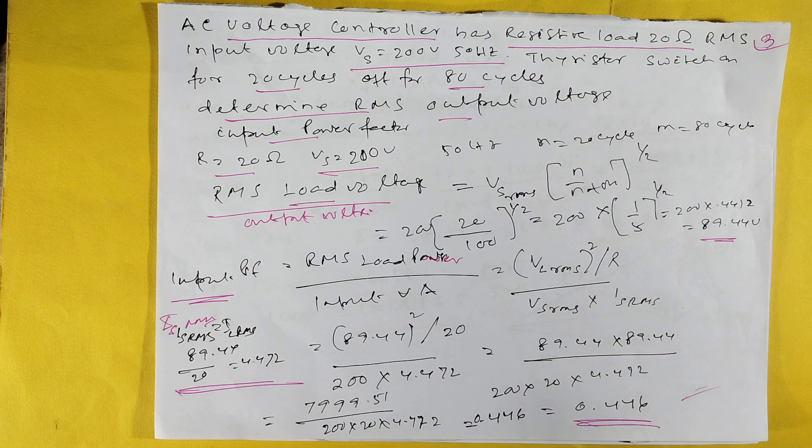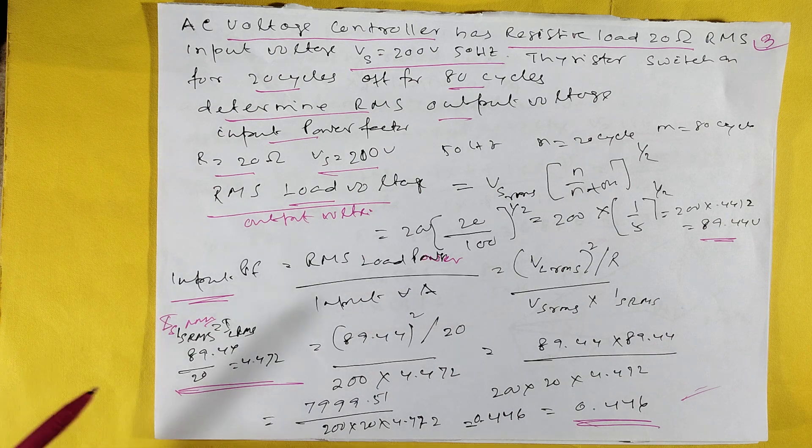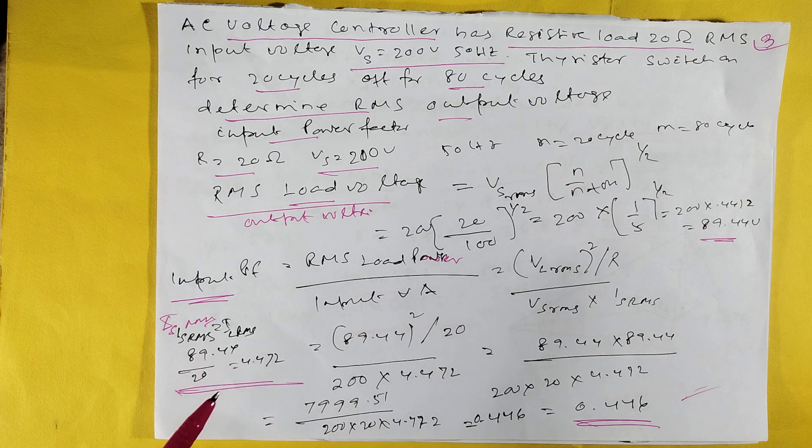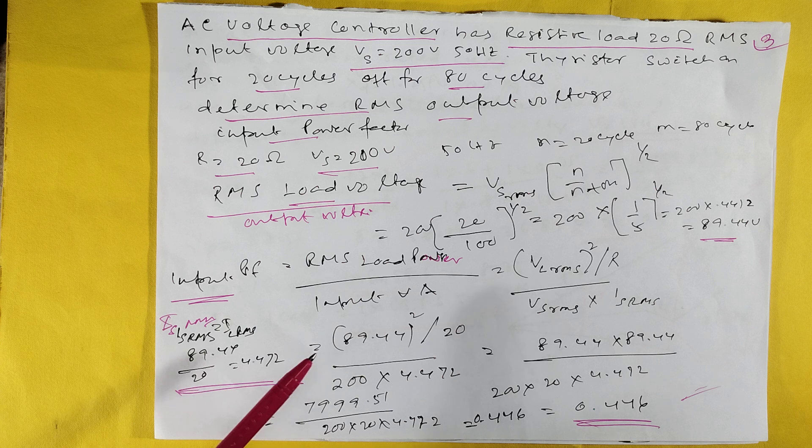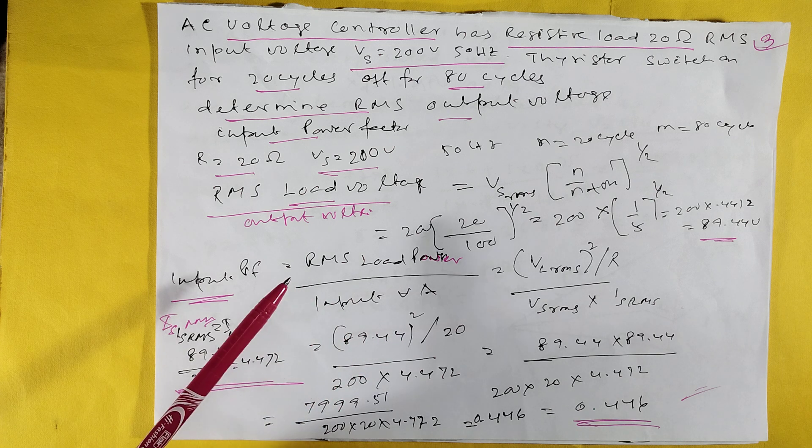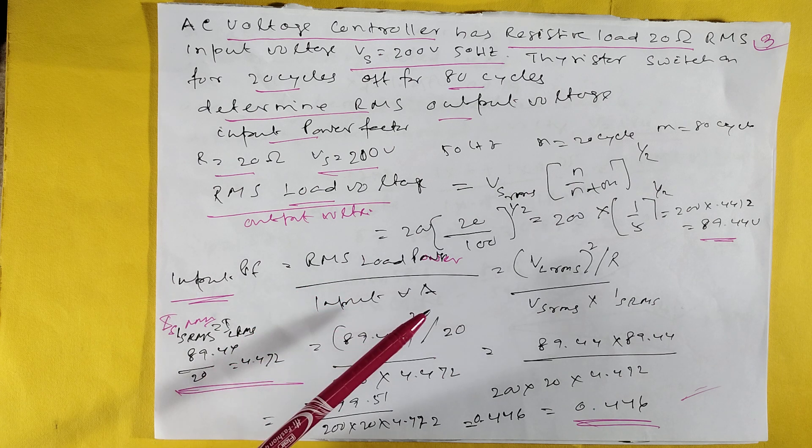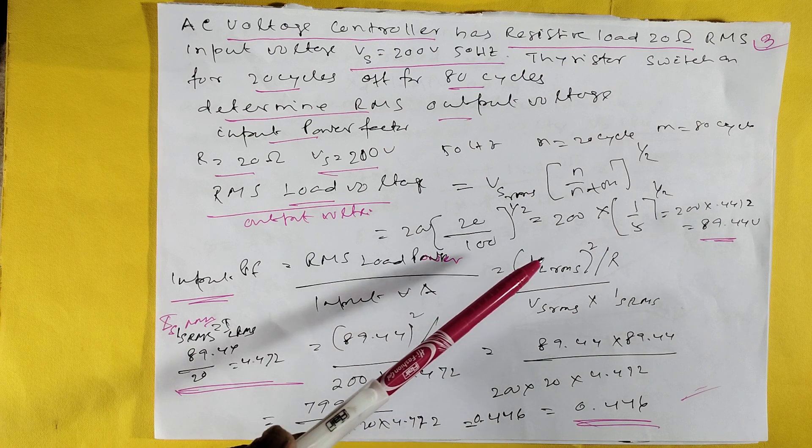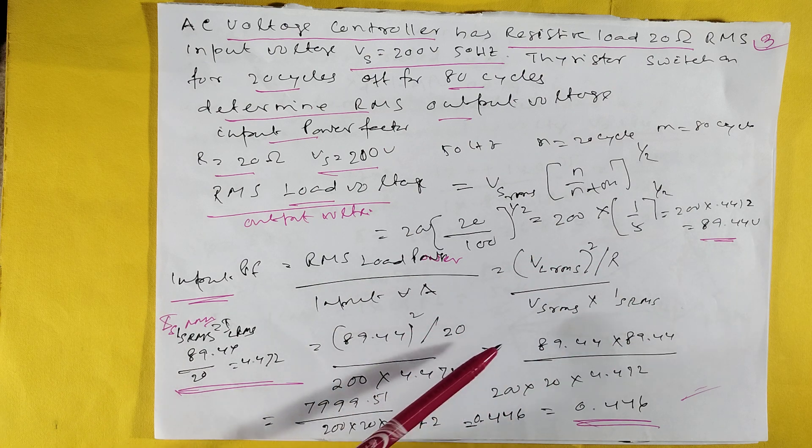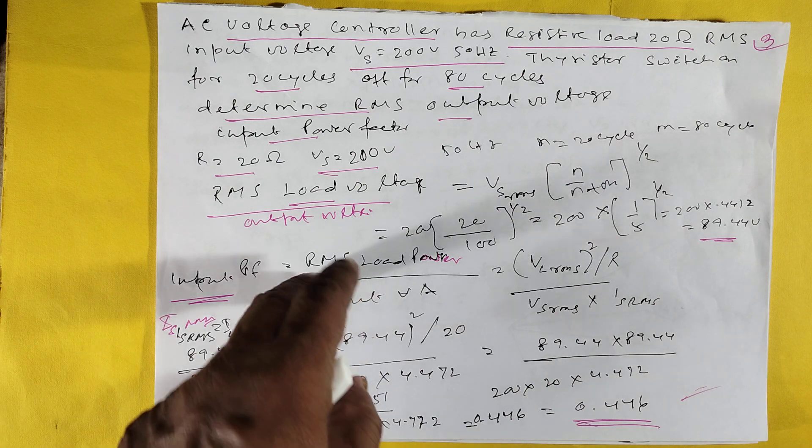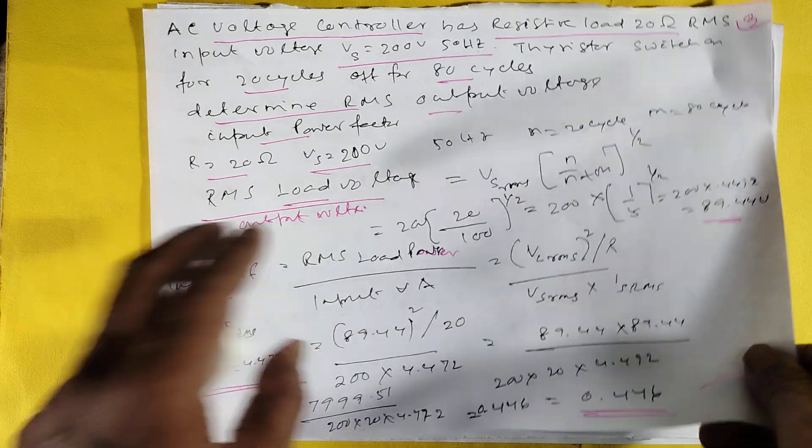Current will come because resistance is 20 ohms, input current is 4.472A. Input power is V²RMS/R. VS RMS is coming to 0.446.